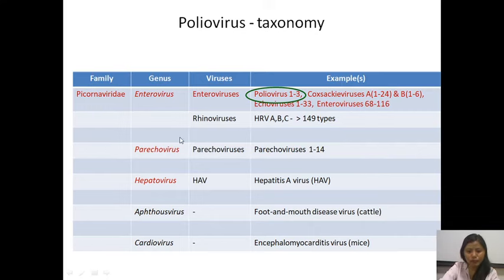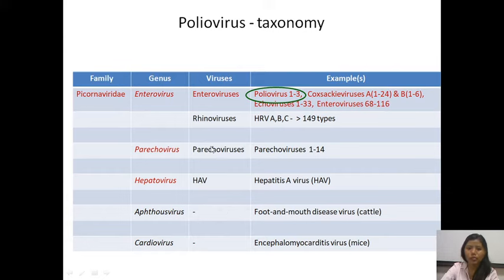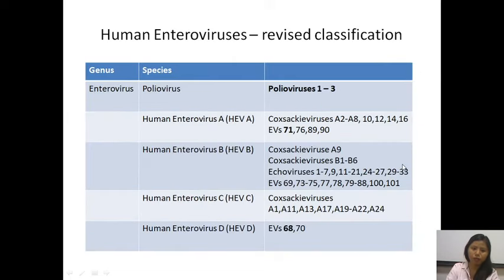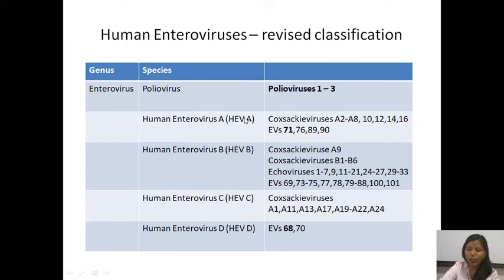Other genera of human importance are parechoviruses, which cause some of those illnesses shown in the earlier table, and hepatoviruses, which include hepatitis A virus — a hepatitis-causing virus transmitted through the fecal-oral route. In the revised classification, the genus Enterovirus has been further divided into many species. Poliovirus has been clubbed separately as types 1, 2, and 3, and all other enteroviruses have been classified as Human Enterovirus A, B, C, and D. For example, what was previously called Enterovirus 68 is now called Human Enterovirus D68, which has been implicated in acute flaccid myelitis.